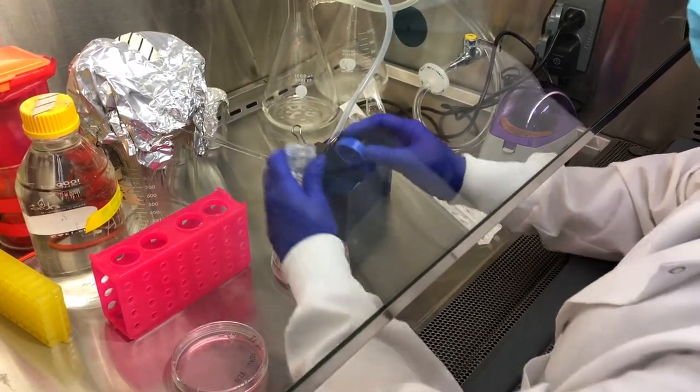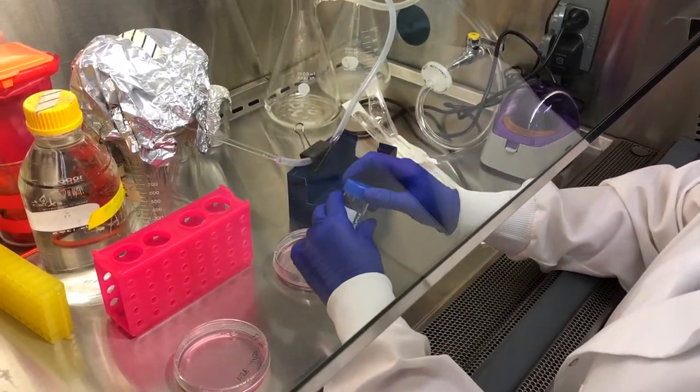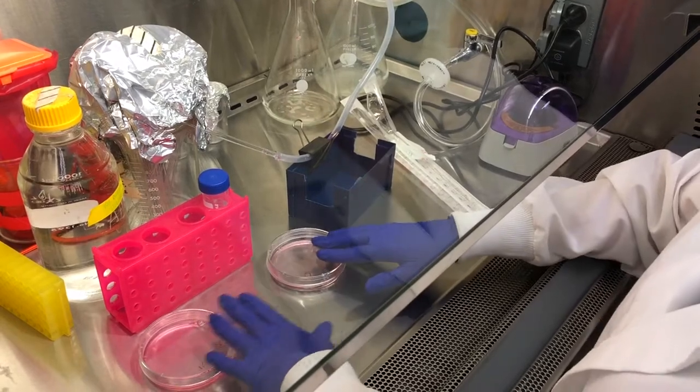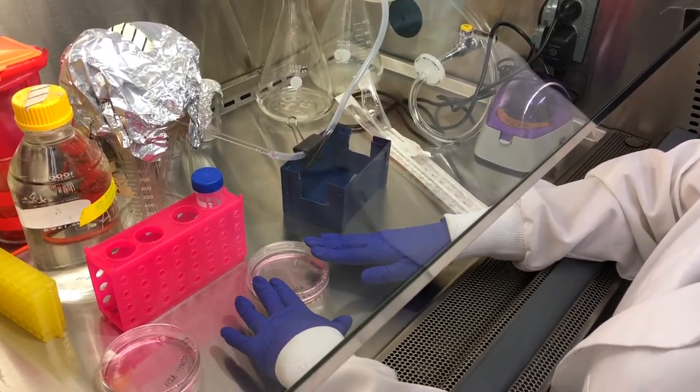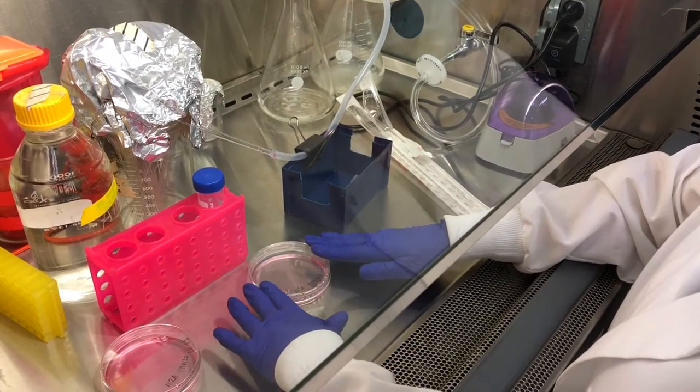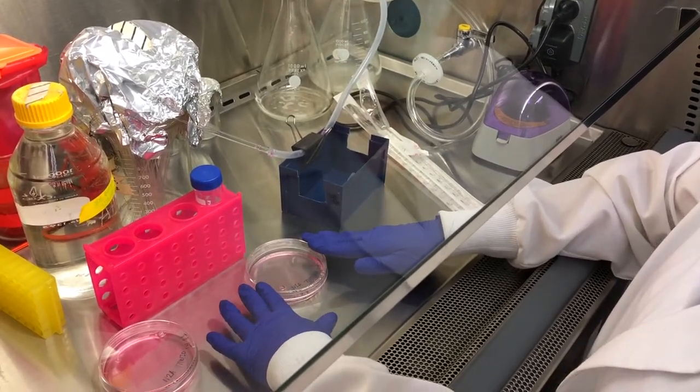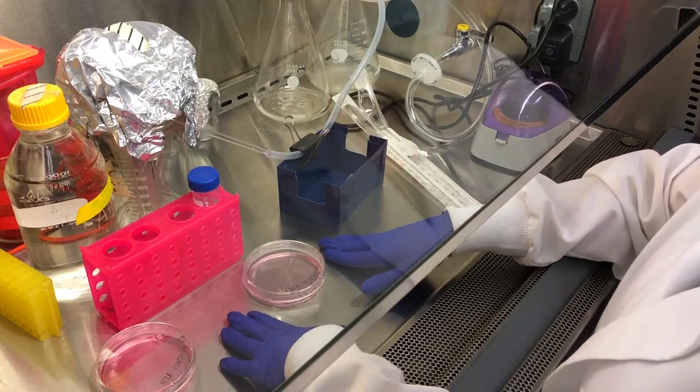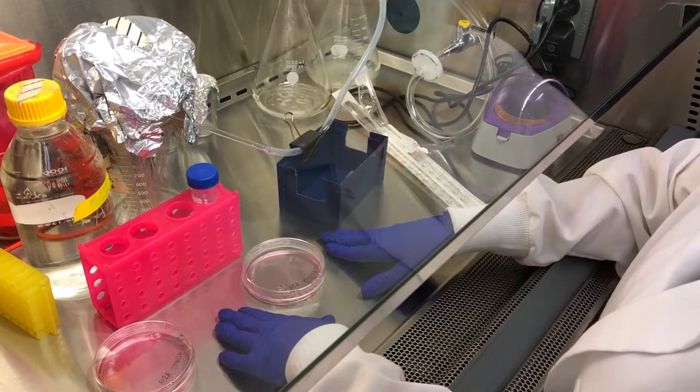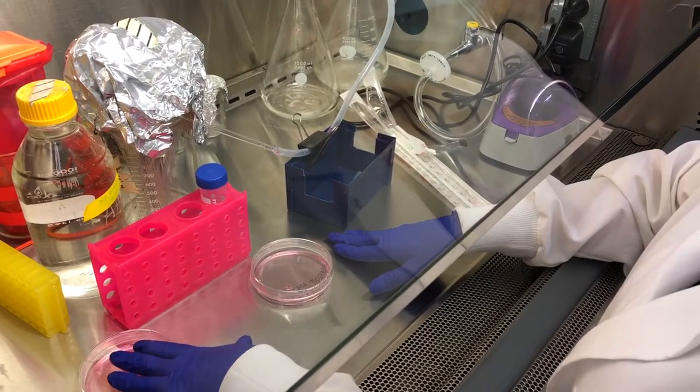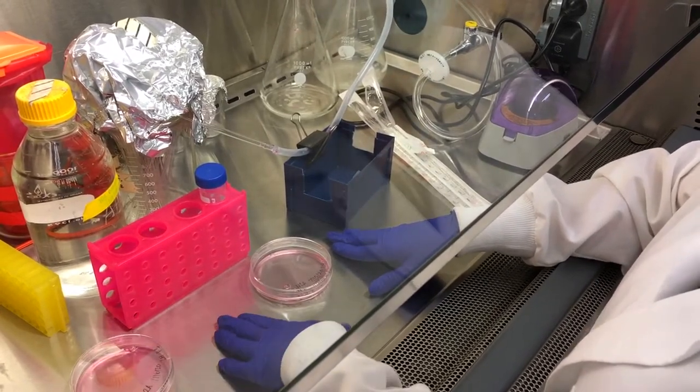There are many different ways you can passage your cells. And this is just one example. The remaining cells in the original plate can either be discarded, or you can transfer the remaining five mils into a new tissue culture plate with five mils of fresh media. That way you'll have two plates of newly passage cells.